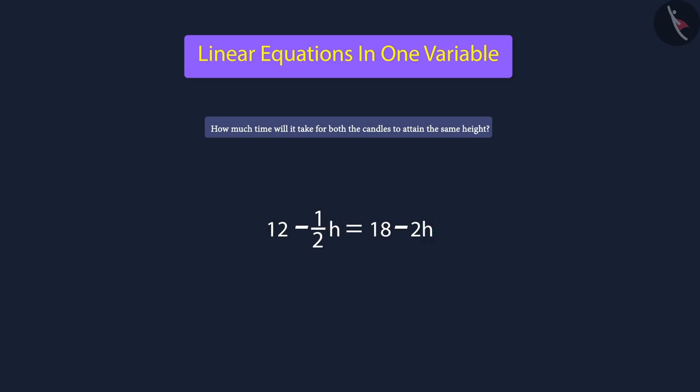But again, there are variables on both sides of the equation. Let us now put the terms with the variable h to the left of the equation and move all the constants to the right side of the equation.